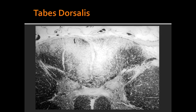What causes Tabes Dorsalis? Tabes Dorsalis is caused by tertiary syphilis. What happens to the spinal cord in Tabes Dorsalis? In Tabes Dorsalis, there is demyelination of the dorsal column and roots.